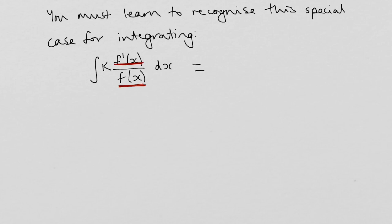That result is that the answer would be ln of that original function in the modulus sign, because we only substitute positive values of x into the log function, and then plus c for any constant that may have been lost in differentiating. I'm going to go through a couple of examples and show you what I mean by this.